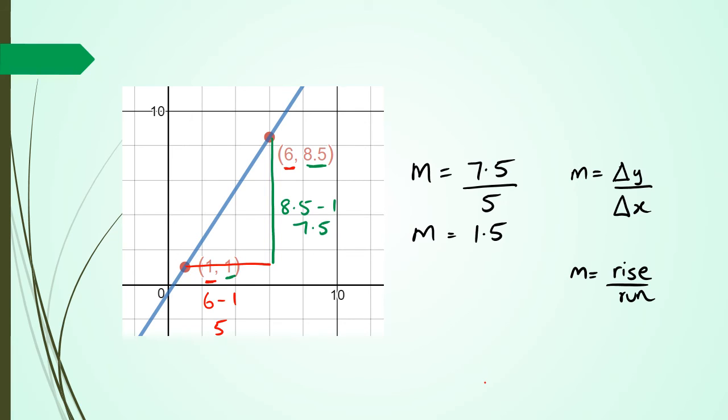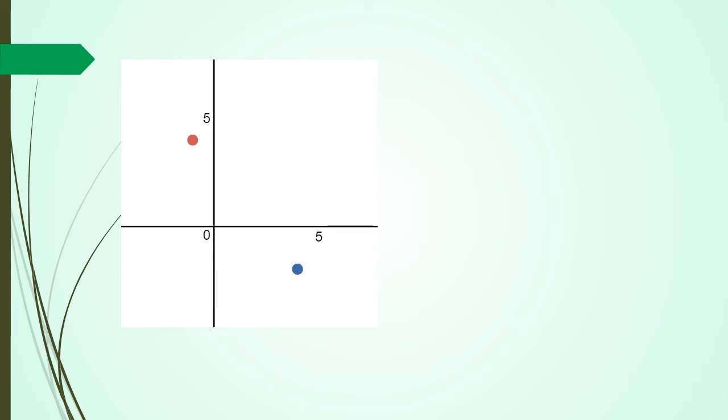Say we have the red point here, which is x1, y1, and we have the blue point, which is x2, y2. So the gradient is—the equation for the gradient is—change in y divided by change in x, which can be said as y2 minus y1 divided by x2 minus x1.